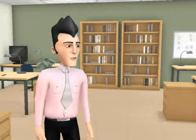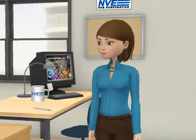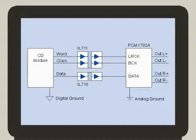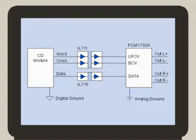Can you give an example? Sure. Here's a typical circuit. It's good practice to isolate serial CD or MP3 data from the analog sound system. This eliminates ground loops, speaker hum, and high-frequency pickup caused by digital currents in analog paths.